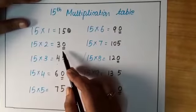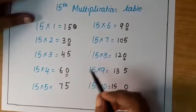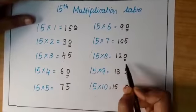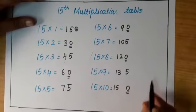So 15 times 1 is 15, 15 times 2 is 30, 15 times 3 is 45, 15 times 4 is 60, 15 times 5 is 75, 15 times 6 is 90, 15 times 7 is 105, 15 times 8 is 120, 15 times 9 is 135, 15 times 10 is 150.